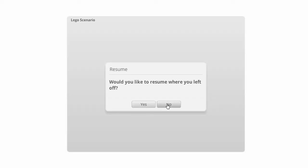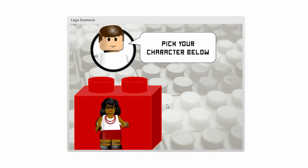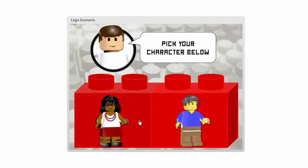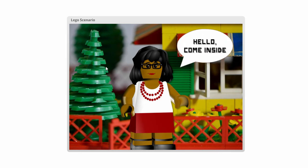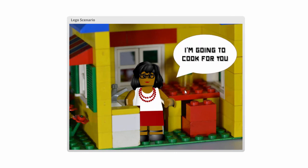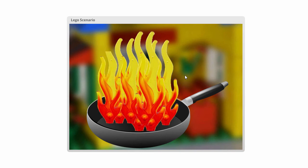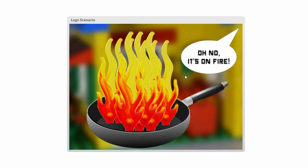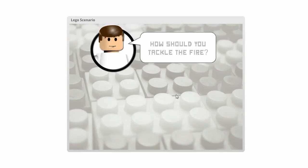Next up is a scenario from Gerard using Legos — a really cool concept. He plays off Michael Allen's CCAF model to put you in a series of scenarios using Lego characters. I really like how he blurs the background for each of the characters, puts them in a situation — someone's going to cook for you, and then something happens, like a fire. What are you going to do? Make sure you check out his blog post on how he put this together — there's a lot of good info in it.